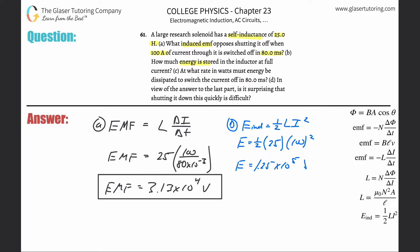And then it says at what rate in watts must energy be dissipated to switch the current off in 80 milliseconds? Now remember, watts or power is equal to a joule per second, right? So that you have to remember, that's the unit of watts. So in other words, they want to find the power; that's really what they're asking us to solve for.